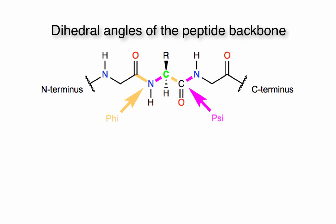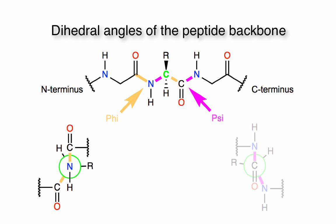Once you understand how to draw the peptide, we can begin our discussion of Newman projections, which present the phi and psi angles of the chiral alpha carbon shown here in green. To understand what these 3D angles are all about, we need to visualize them in 3D space.